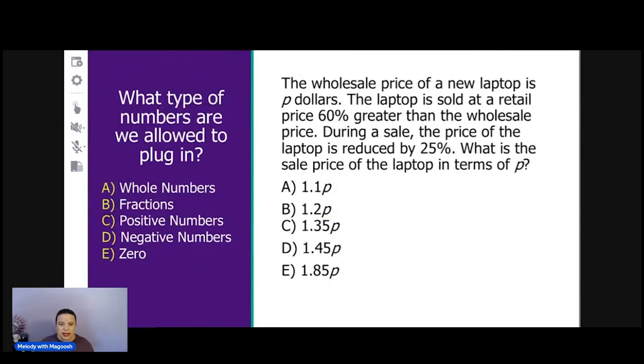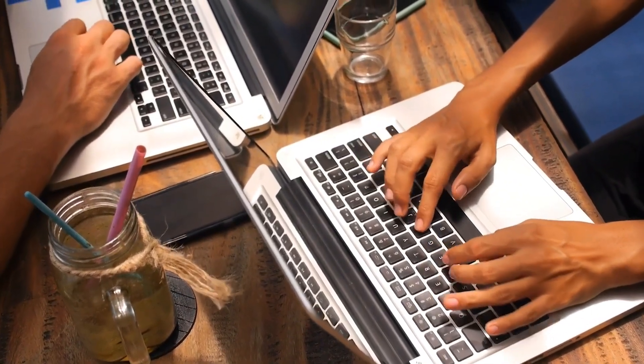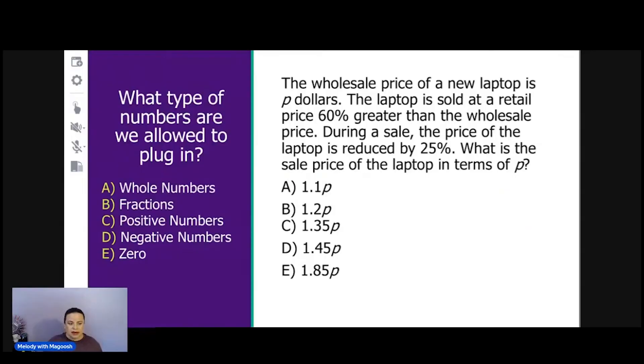Next thing we need to look at is the rules of the problem. What kind of numbers can we plug in? We don't have anything directly stating requirements, but we do need to think critically for a second. We're talking about the price of a laptop computer. So that price, the money you have to pay, logically is going to be a positive number. You're not going to have a zero price, and if you tried, you're going to have a lot of inconveniences working out this problem. The price is going to be a positive number because that's how we sell things. We charge positive amounts of money.